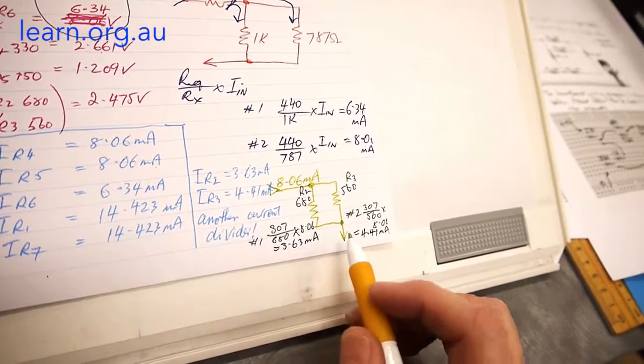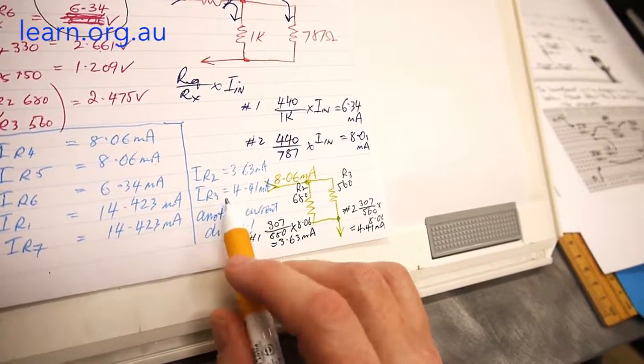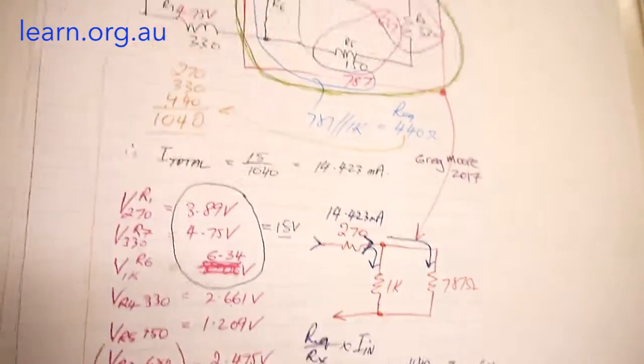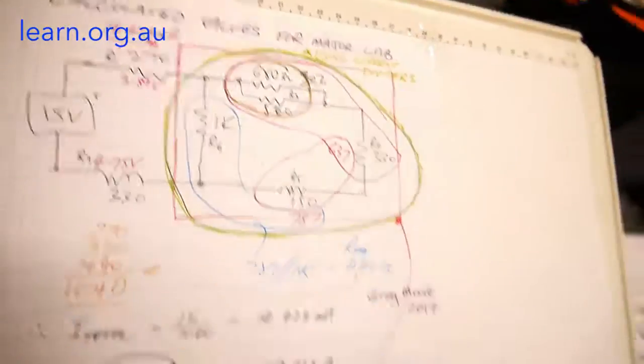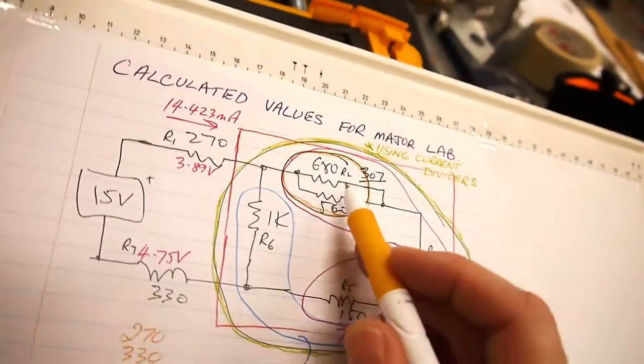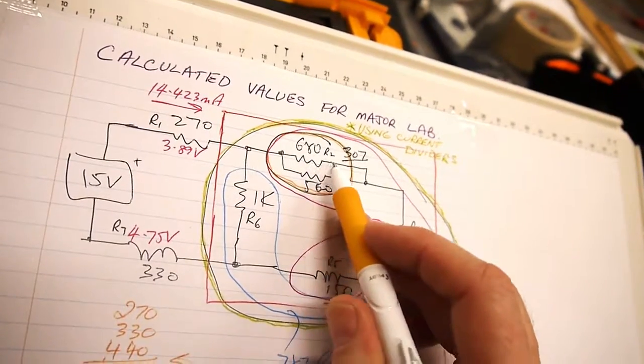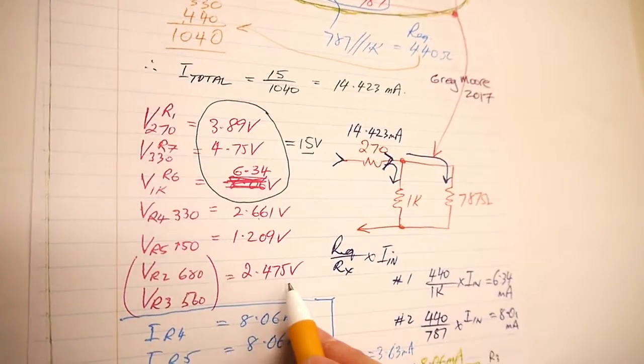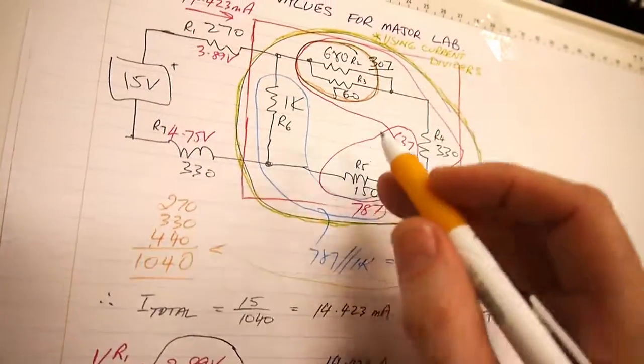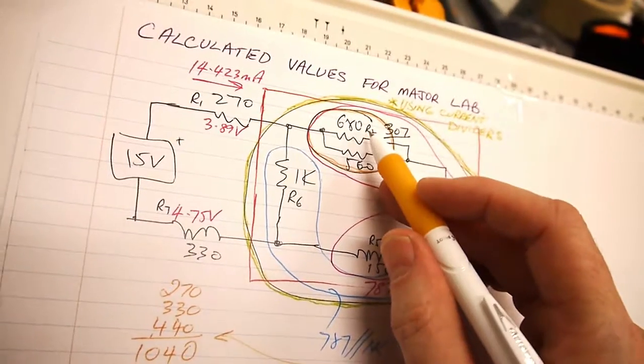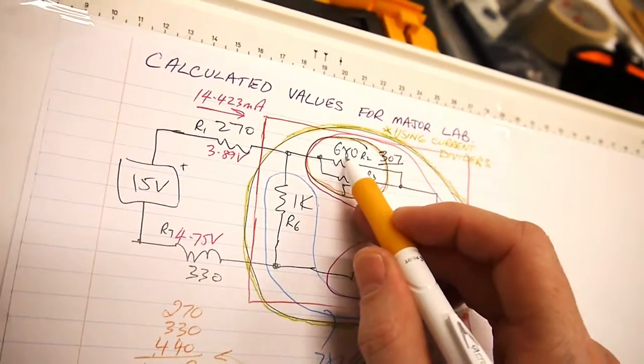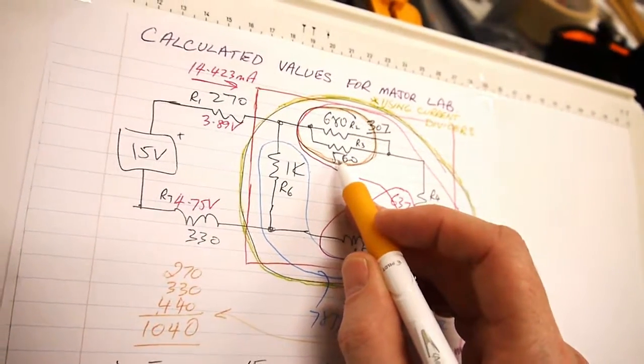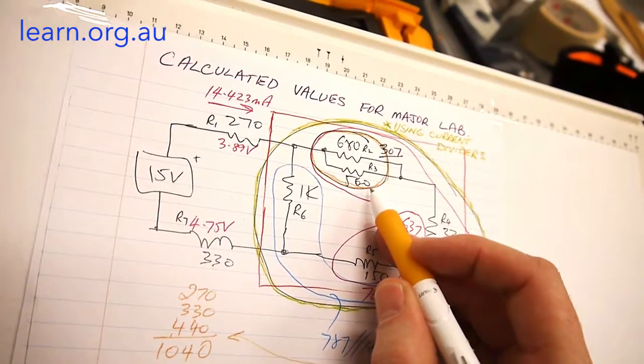Of course they could have been worked out simply using Ohm's law as well if you didn't want to use a current divider. We knew the voltage across R2 and R3, that was 2.475 volts. So we could have said I equals V on R, 2.475 volts divided by firstly 680 ohms to give me one answer, and secondly divided by 560 ohms to give me the other answer.